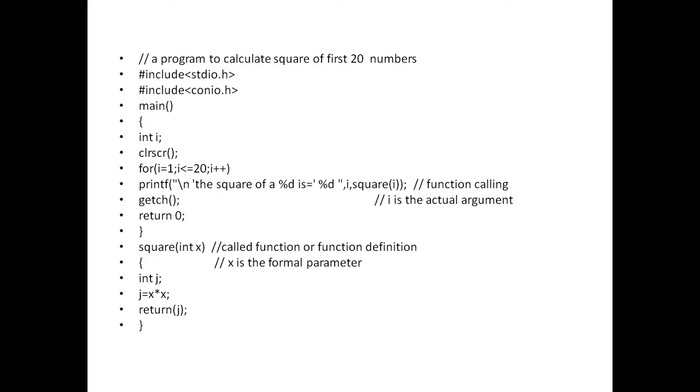Here for loop: for i = 1, i less than or equal to 20, i++. Here printf slash n, the square of %d is %d. This is for display purpose. Here i comma, I am calling the function square. This is the calling of the function. Here i is the actual argument.